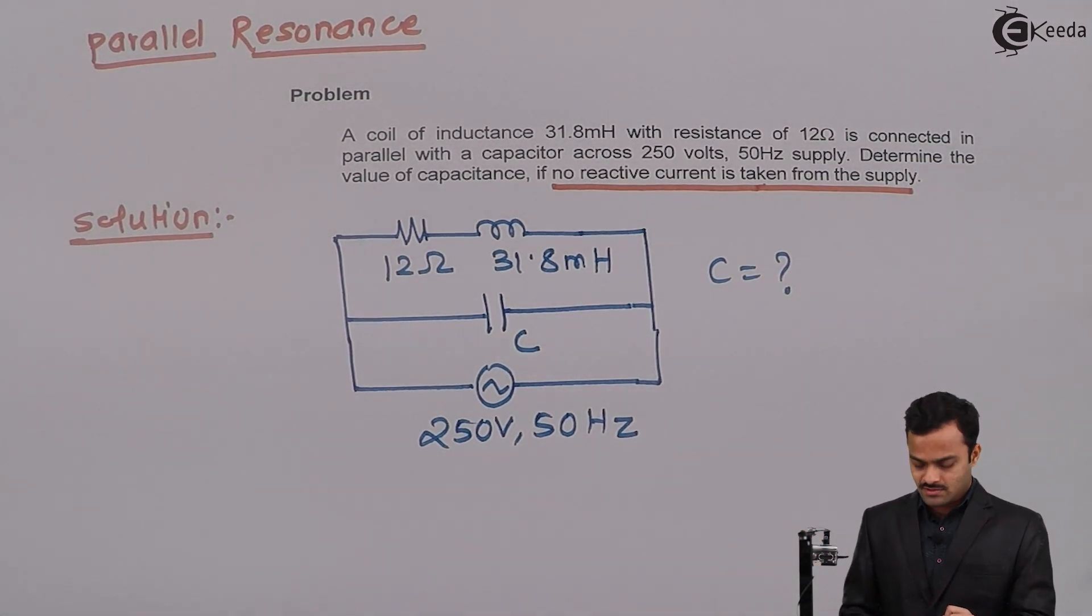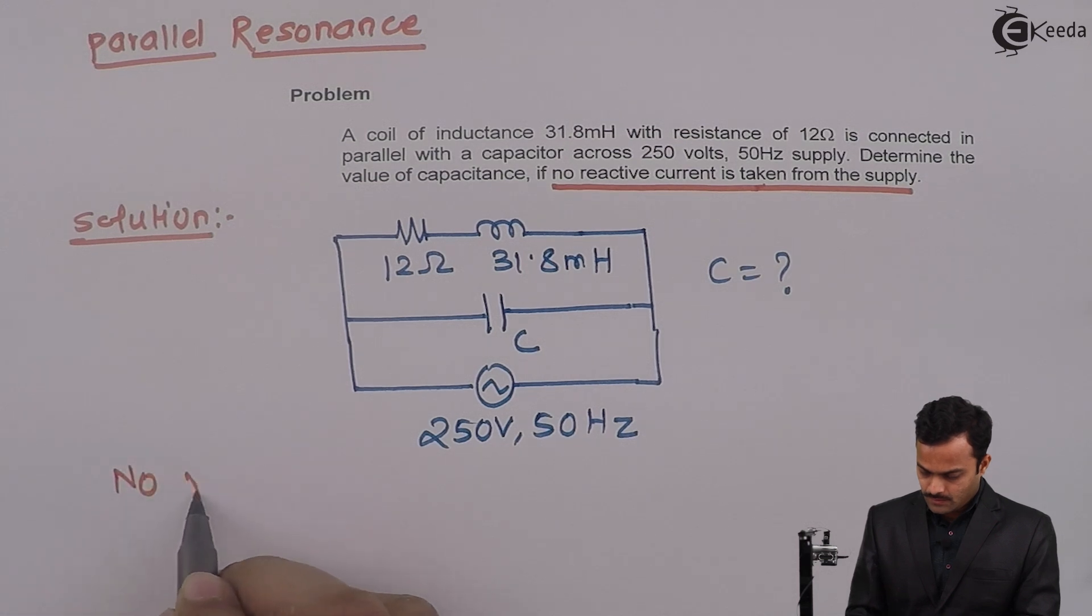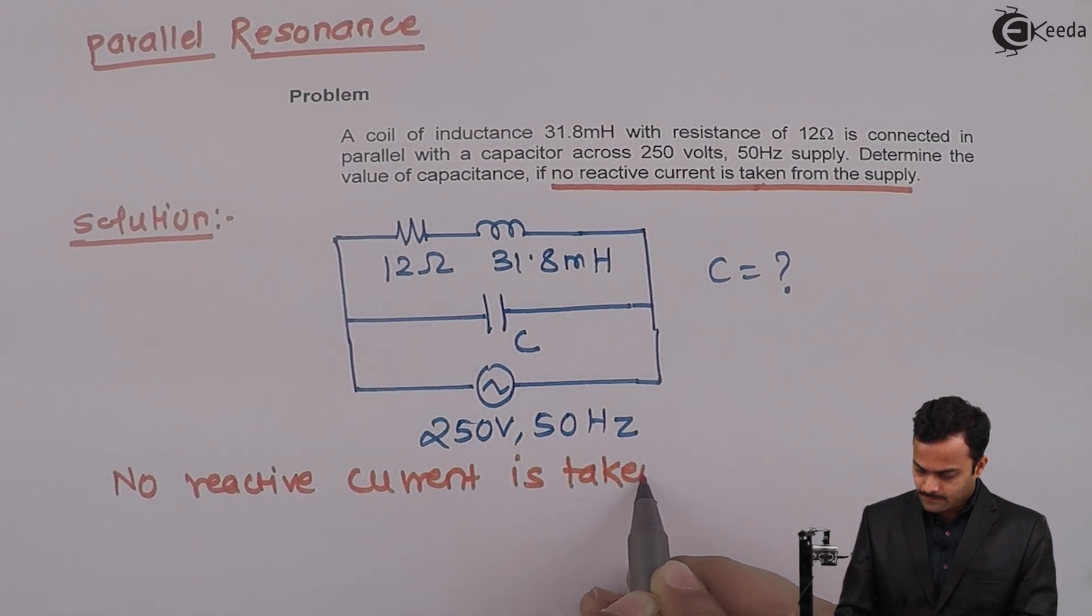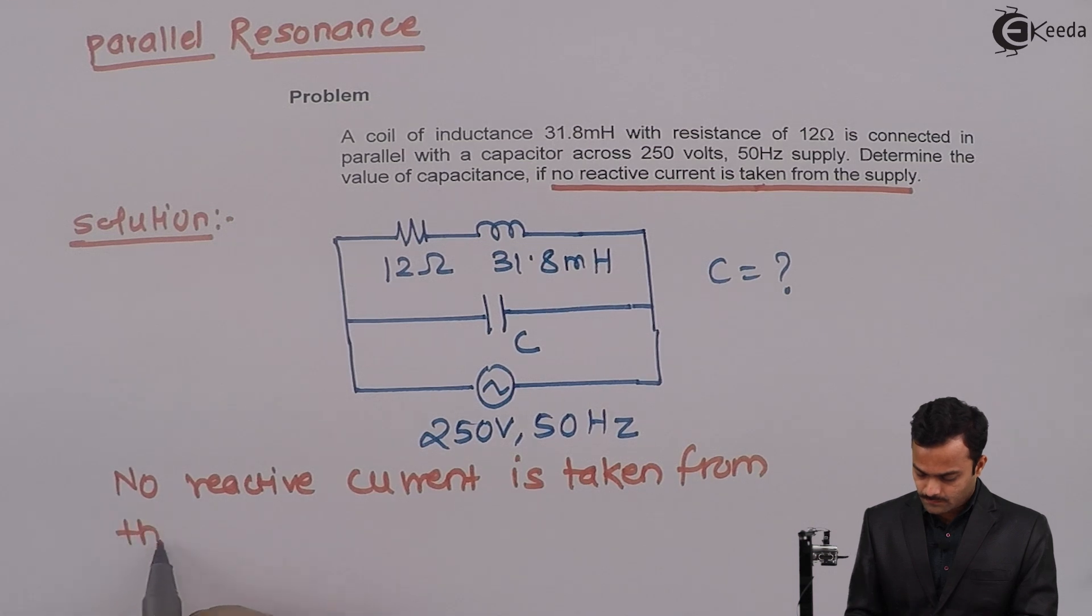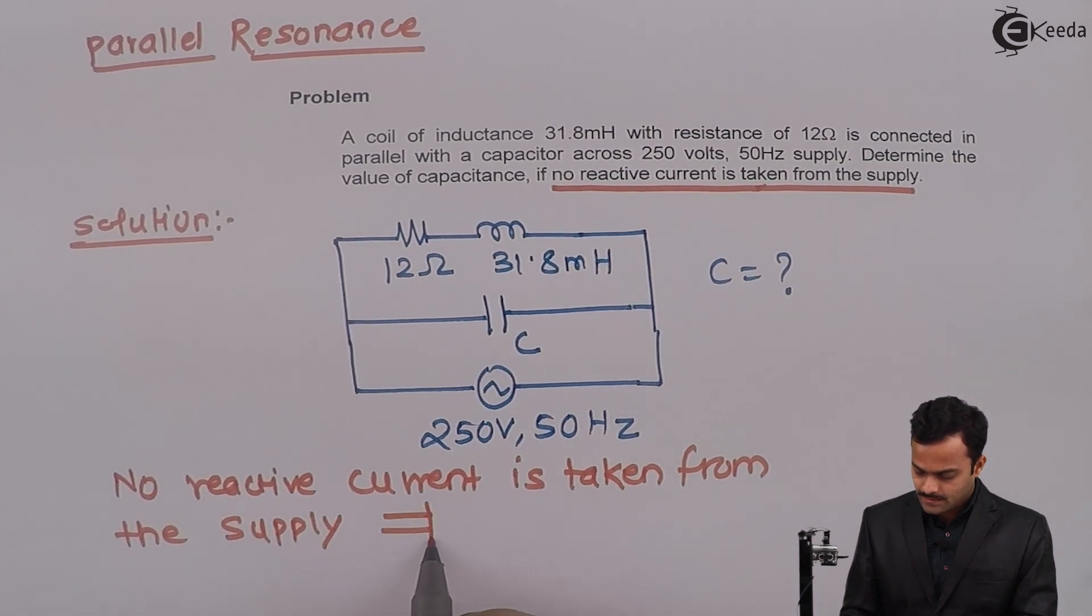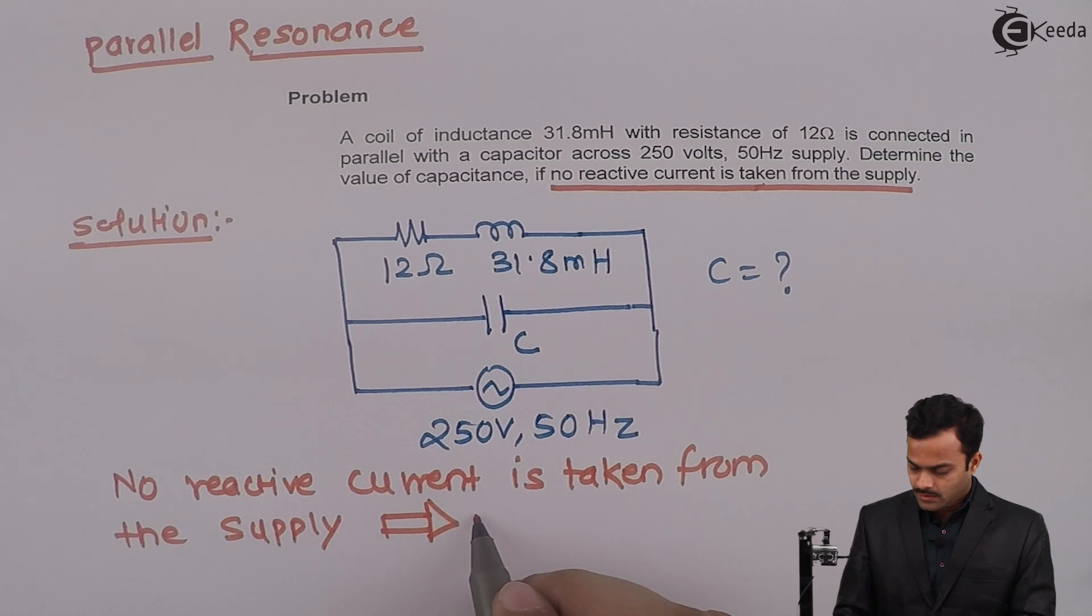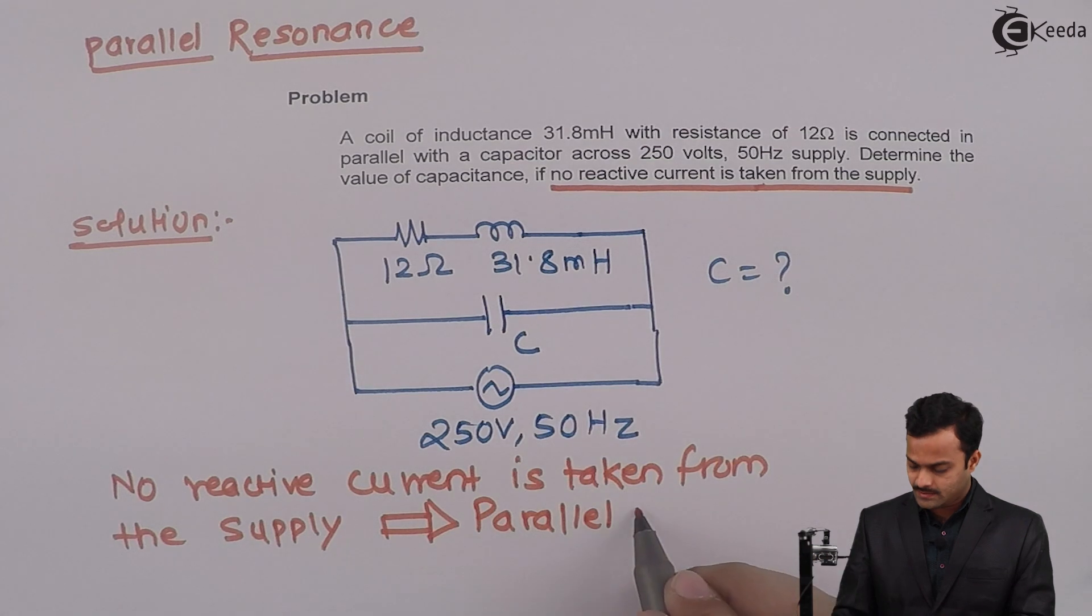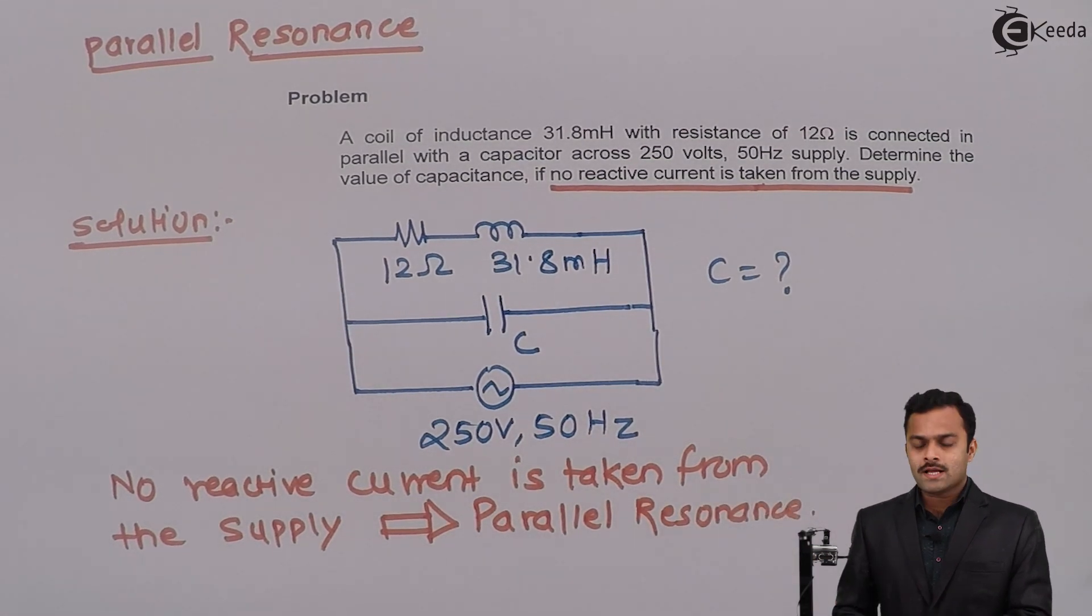Why? Because this is telling you this is a parallel resonance circuit. No reactive current is taken from the supply implies parallel resonance. Once you have determined it's a resonance rest of the problem will be very easy because you have to just apply one formula.